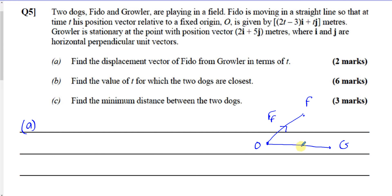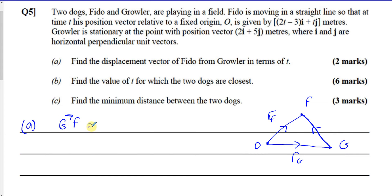This is O to G — from the origin to Growler — which I'll call RG. And they want us to find the displacement vector of Fido from Growler, so basically how to get to Fido from Growler. They want us to find this vector here. So what they want us to find is G to F, and we can see that G to F is minus OG plus OF, or you can say RF minus RG.